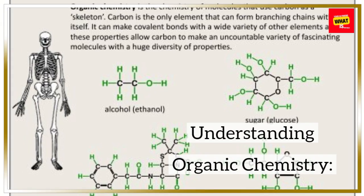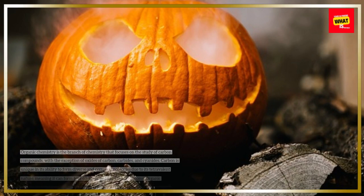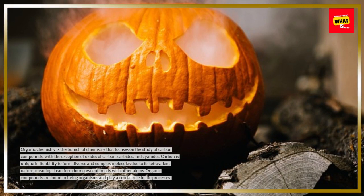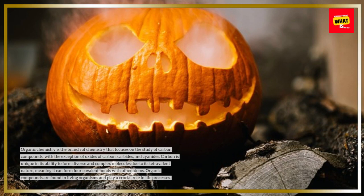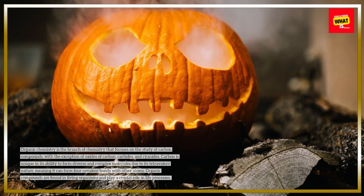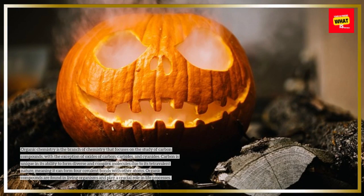Understanding Organic Chemistry. Organic chemistry is the branch of chemistry that focuses on the study of carbon compounds, with the exception of oxides of carbon, carbides, and cyanides. Carbon is unique in its ability to form diverse and complex molecules due to its tetravalent nature, meaning it can form four covalent bonds with other atoms. Organic compounds are found in living organisms and play a crucial role in life processes.